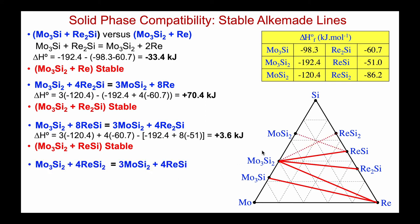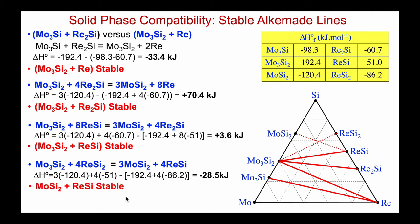Continuing systematically, we look at the next pair of possibilities, enter it as a chemical reaction, and find the enthalpy is negative — the right-hand side is stable: MoSi₂ plus ReSi. So the competing line is not a possibility and we get rid of it. Now there's only one remaining possibility: we must have a stable Alkemade line between MoSi₂ and ReSi₂, so we can just enter it without any further calculation.